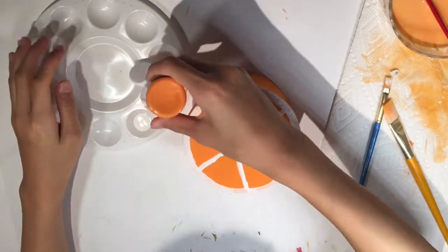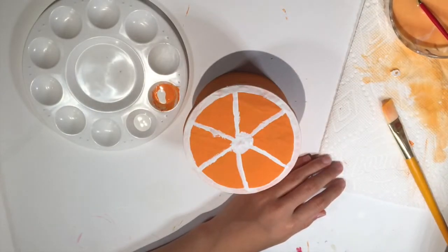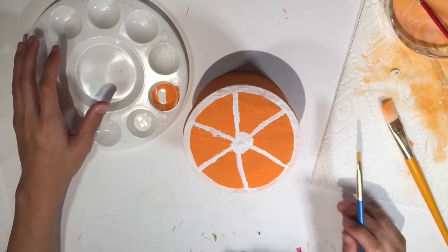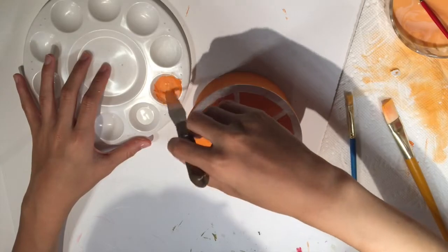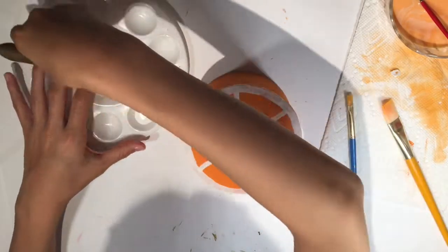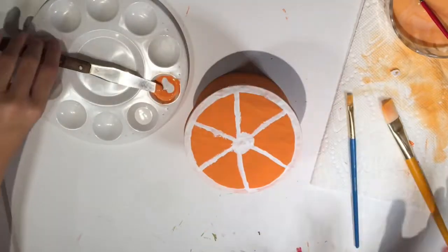Now I felt like this was kind of boring because it was just orange and white, so I decided to mix a lighter shade of orange to color in the flesh, I guess you could say, of the orange. Because in real life, the orange flesh is just slightly a different color from the skin. So I decided to give it a little bit more dynamic by painting the flesh of the orange a paler color.